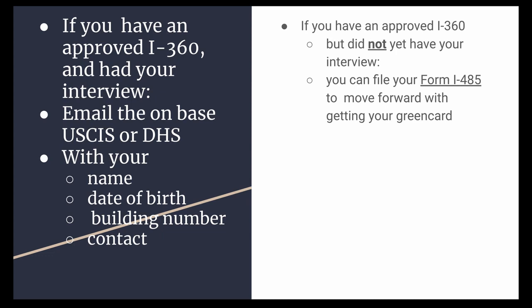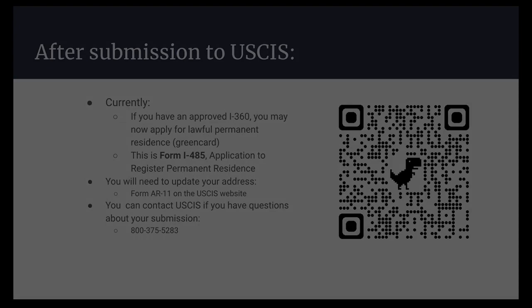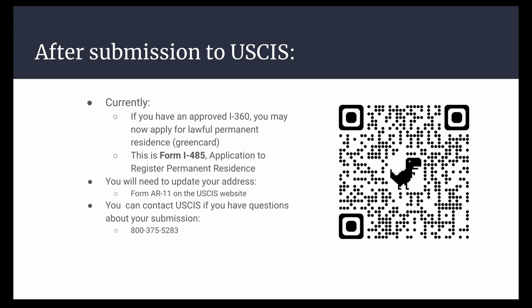If you had an approved I-360 but did not yet have your interview, you can file Form I-485 to move forward with getting your green card. Once you fill out the Form I-485 application to register for permanent residence, you can also submit Form AR-11, which is on the USCIS website, to update your new address when you get resettled. This QR code leads to the Form I-485 site.